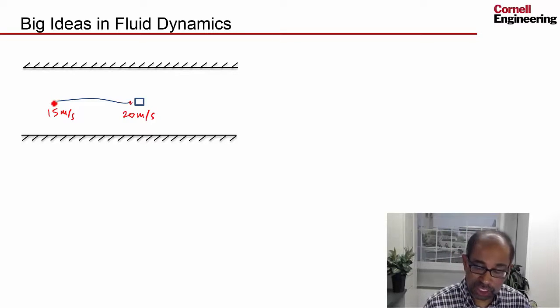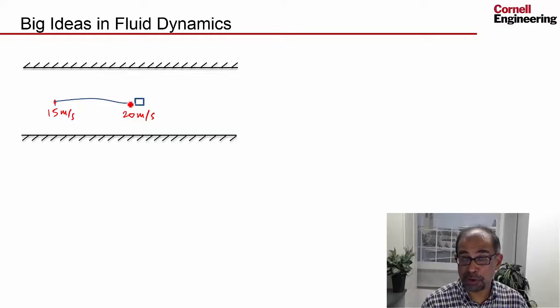Steady flow means that now if I change my perspective and look only at that point, at that point, the velocity is always going to be 15 meters per second. And then if I'm just looking at that point, the velocity over there is always going to be 20 meters per second.